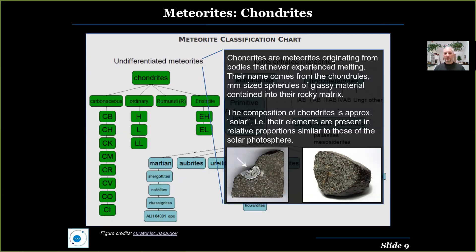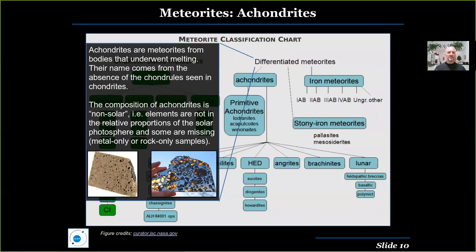The other class is the achondrites — named for lacking the chondrules present in chondrites — which are fragments of bodies that experienced melting and high temperatures that caused the reshaping of their compositional structure. Their composition is highly non-solar, and we can have samples containing only rocks or only metals, without the other set of elements.